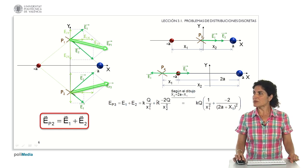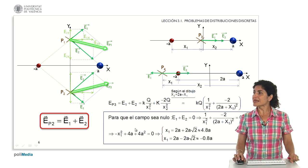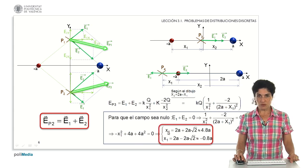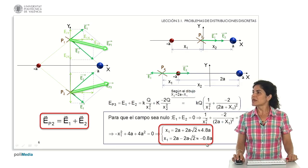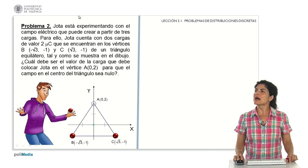Therefore, in my global equation I am left with this representation. If we impose the condition that the global field at my point is null — E sub 1 plus E sub 2 equals zero — I am left with an equation that simplified gives me the value of my variable X sub 1 as the solution. I find in the end two possible values for X sub 1: a coordinate on the X axis of value 4.8 times the parameter A, and a second solution of X sub 1 equal to minus 0.8 times A. Therefore, points of zero global field do exist and can be found.